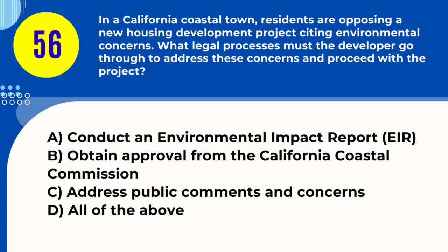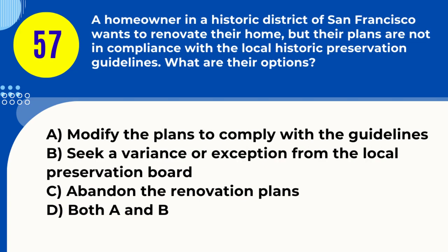Question 56. In a California coastal town, residents are opposing a new housing development project citing environmental concerns. What legal processes must the developer go through to address these concerns and proceed with the project? A. Conduct an environmental impact report (EIR) B. Obtain approval from the California Coastal Commission C. Address public comments and concerns D. All of the above. Answer: D. All of the above. Explanation: Addressing environmental concerns involves an EIR, Coastal Commission approval, and addressing public comments.